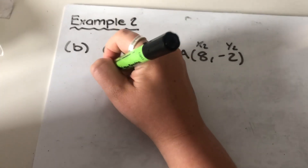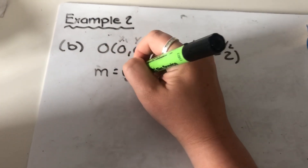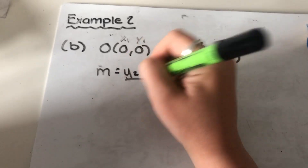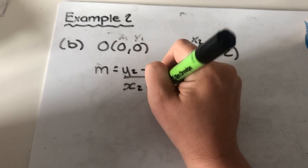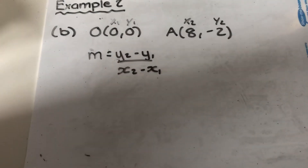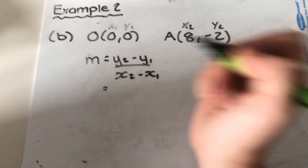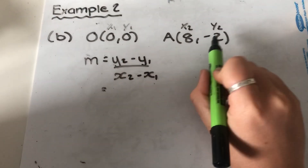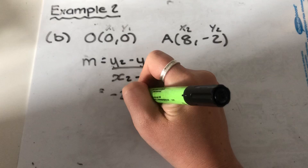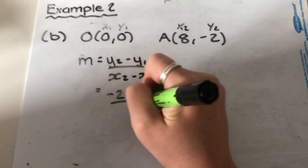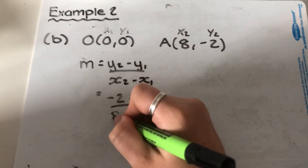Write down your formula. So m is equal to y2 minus y1 over x2 minus x1. Then we're substituting our values in. So we're doing negative two take away zero on the top, and we're doing eight minus zero on the bottom.